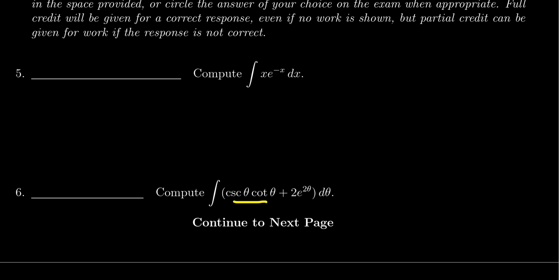Now I'm going to treat this as two separate problems. We're going to look for an antiderivative of cosecant cotangent, and then we're going to deal with two e to the two theta.